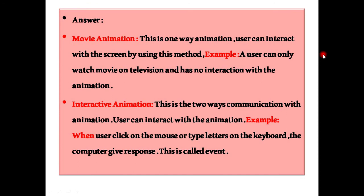Interactive animation - This is the two ways communication with animation. User can interact with the animation. Example: When user click on the mouse or type letters on the keyboard, the computer give response. This is called event.